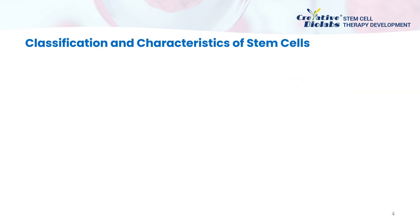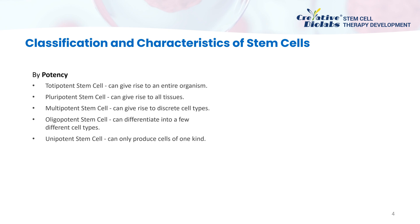With the deepening of scientific research, a great number of cell types are discovered to have the characteristics of stem cells, at least to some extent. Thus, stem cells are further classified in different ways. The most traditional classification is based on their potency, which specifies the differentiation potential of stem cells. There are totipotent stem cells that can give rise to an entire organism, pluripotent stem cells that can give rise to all tissues, multipotent stem cells that can give rise to discrete cell types, oligopotent stem cells that can differentiate into a few cell types, and unipotent stem cells that can only produce one type of cells.